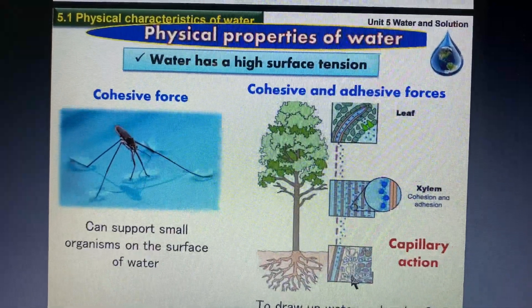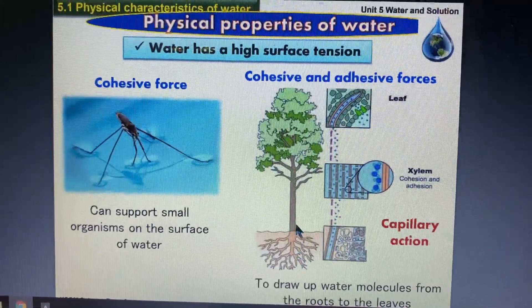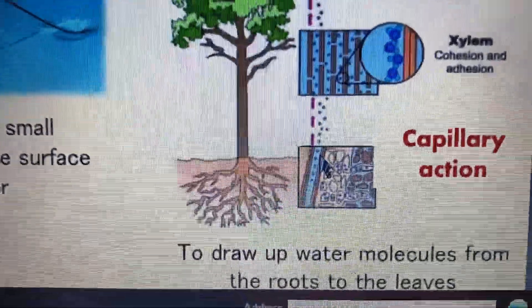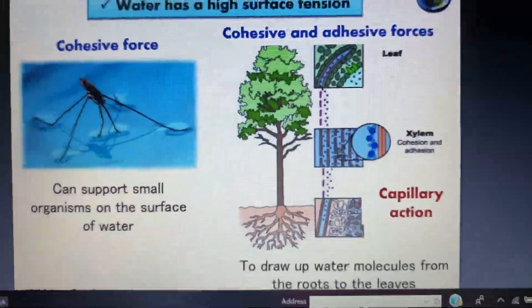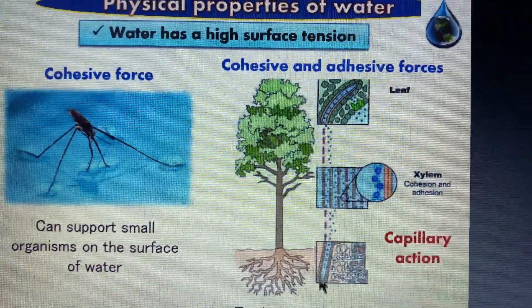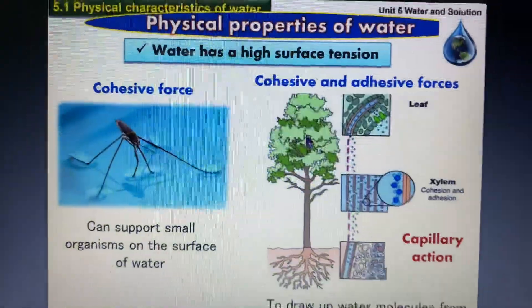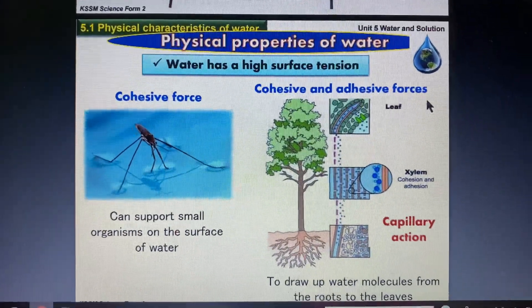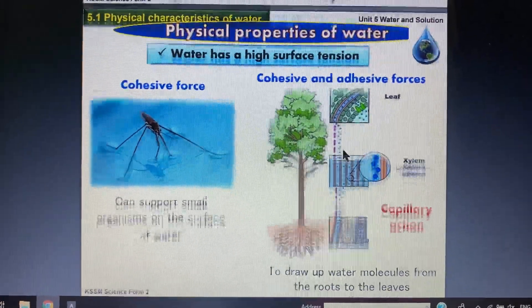The importance of cohesive and adhesive forces is seen in the capillary effect. This is the movement of water from the roots of plants, through the stem, and up to the shoots and leaves. This is possible because of the forces of attraction between the water molecules and the cell structures — the adhesive forces. Both cohesive and adhesive forces allow water molecules to move up from the roots against gravity in plants.